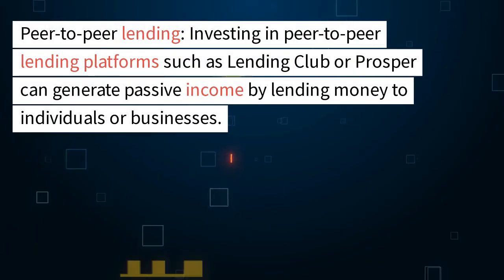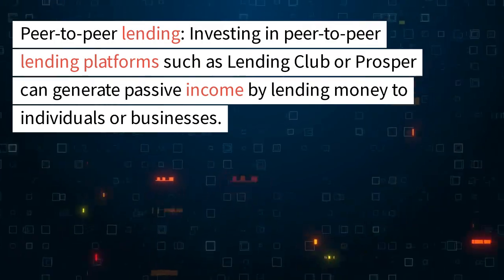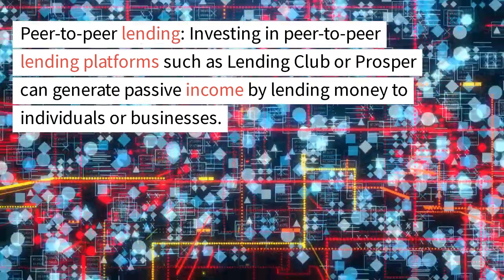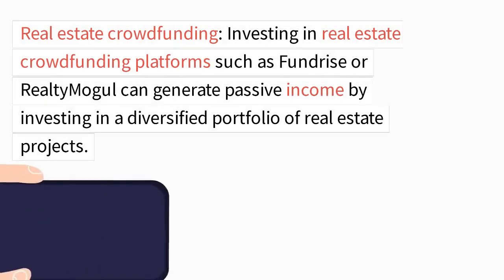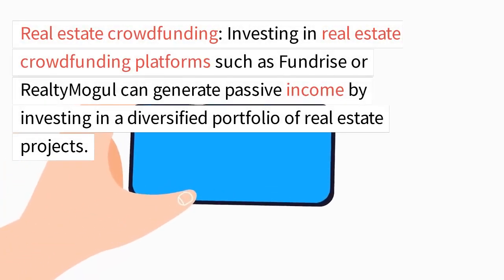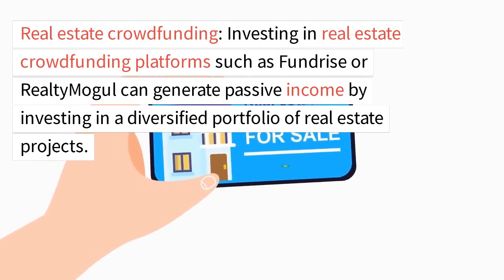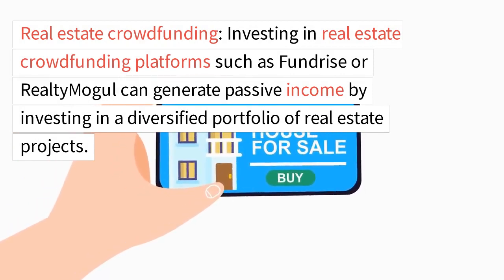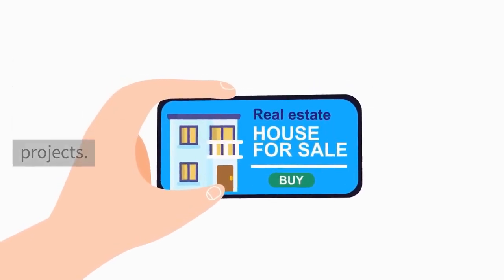Peer-to-peer lending. Investing in peer-to-peer lending platforms such as Lending Club or Prosper can generate passive income by lending money to individuals or businesses. Real estate crowdfunding. Investing in real estate crowdfunding platforms such as Fundrise or Realty Mogul can generate passive income by investing in a diversified portfolio of real estate projects.